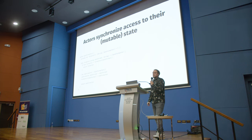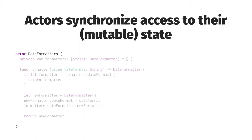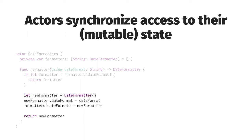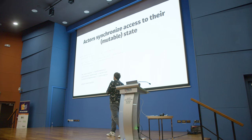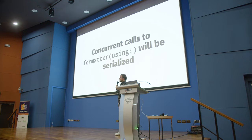Actors synchronize access to their mutable state. We define an actor similarly to a class. We might have a private variable — a formatter cache — and a function that could be called concurrently to get date formatters. It checks if we have a formatter in the cache; if not, it creates a new one. The issue is that this function can be called concurrently, and we need it to be serialized. Without serialization, we get data corruption, crashes, and hard-to-debug problems. Making this an actor allows concurrent calls to be serialized, and everyone will be much happier.